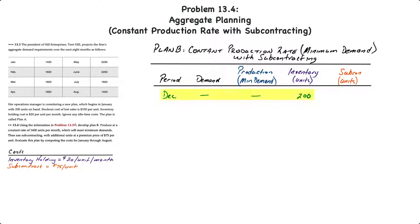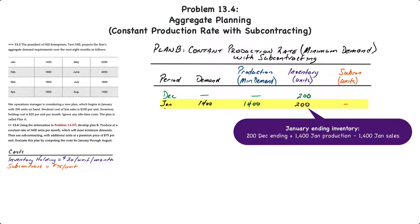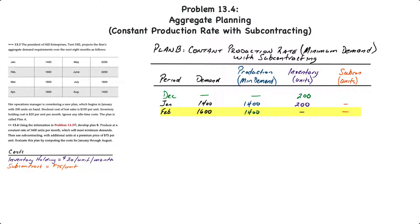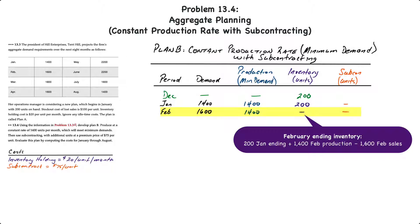For our first line, I've also added in the inventory at the end of December. Starting with January, the demand is 1,400 units, and monthly production will be 1,400 units — the requirement to meet the minimum demand, since the lowest level of demand in the entire eight-month period is 1,400 units. This results in 200 units in ending inventory: the 200 units from December, plus 1,400 produced, minus 1,400 demanded. Since there is inventory, there will be no need to subcontract. In February, demand is 1,600 units, production is 1,400, and ending inventory will be zero — 200 units from January plus 1,400 produced minus 1,600 demanded — resulting in zero inventory and zero subcontract costs.